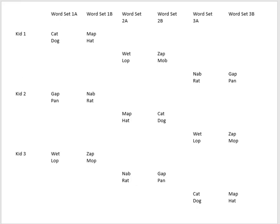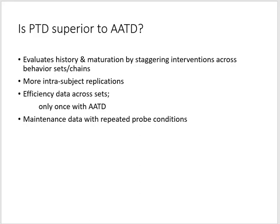A couple of advantages make parallel treatments superior to adapted alternating treatments: it can control for threats to history and maturation. Conducting it across participants provides even more inter-subject replication. With three tiers and six behaviors, you can also gather efficiency data — how quickly participants acquire the behavior, how many sessions, how many minutes — answering efficiency questions. Carrying probes across sets also provides an inherent design feature to assess maintenance.